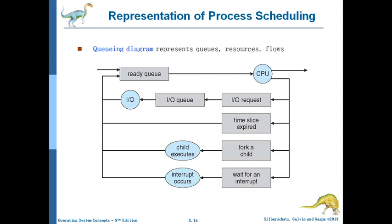Continuing from the previous video lecture where we discussed different queues - the job queue, ready queue, and device queue. Now we'll see how the process moves into different queues. When a process is admitted, this is called a queuing diagram, which is a representation of different queues, resources, and flows. This is important from an exam point of view - you need to draw the queuing diagram and explain the steps.